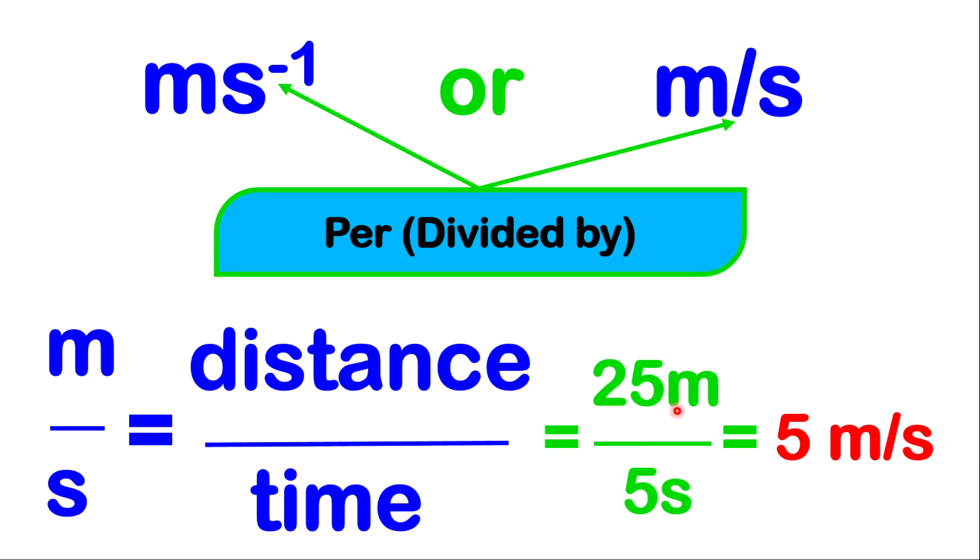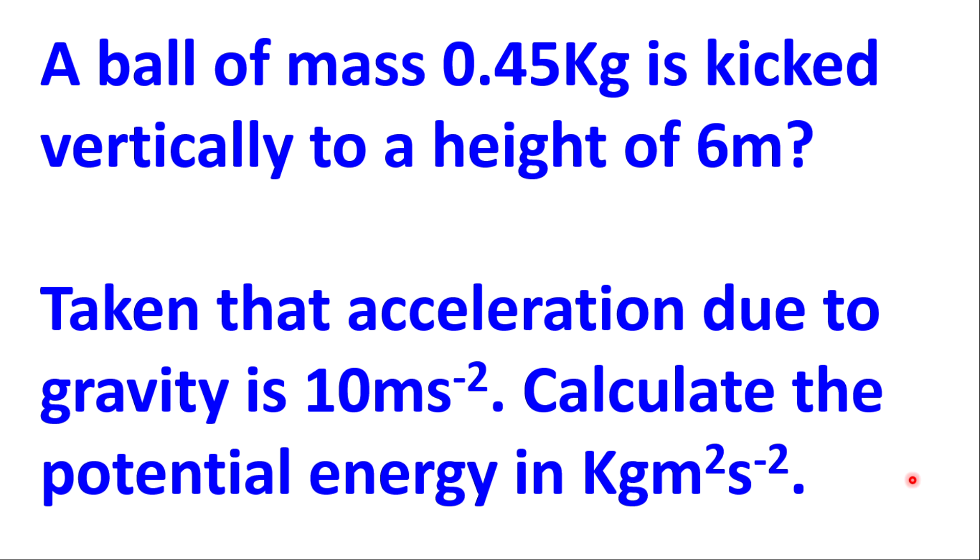Therefore, we know it is 25 meters divided by 5 seconds, which equals to 5 meters per second. Now, this type of approach is very useful when it comes on to if you forget your formula. The units can help you understand or derive your formula. Now, let's look at this other question. This question may be a little bit longer and may take a few more steps.